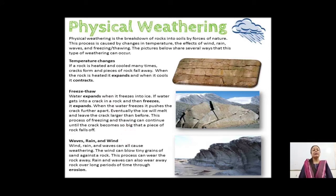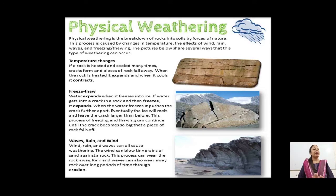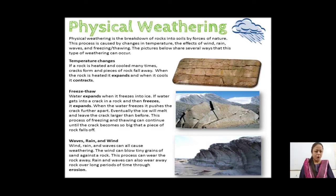The first and second agents we will learn in detail shortly. Wind, rain, and waves are also agents of erosion as well as weathering. When they mechanically hit the rock and the rock breaks, we say it is physical weathering. The wind can blow tiny grains of sand against a rock, which can wear the rock away. Rain and waves can also wear away rock over a long period of time through erosion. So little by little, waves, rain, and wind can lead to the breaking down of a rock physically.